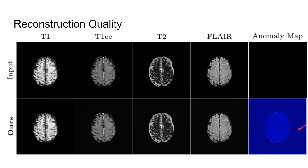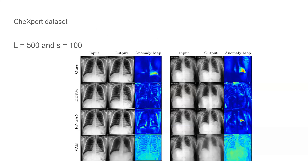Let's talk about the reconstruction quality — if we can reconstruct the images pretty well, then the model can have a better result for generating the anomaly map. This is the generation result for a healthy image input. In the abnormality map, it basically has nothing, which means we are generating a pretty good result with basically no difference compared with the original image. Comparing with other methods on the CheXpert dataset — chest X-rays of the human upper body — our model shows the anomalies clearly, while DDPM has a lot of irrelevant parts highlighted and doesn't even detect the anomaly. FPGAN is not good either. And the VAE is probably the worst.